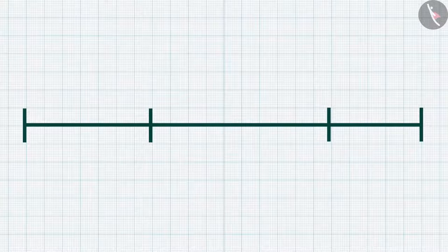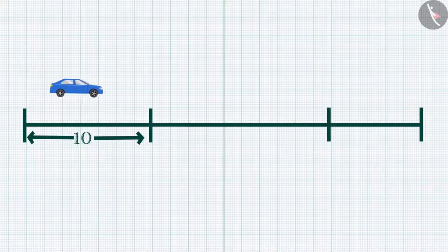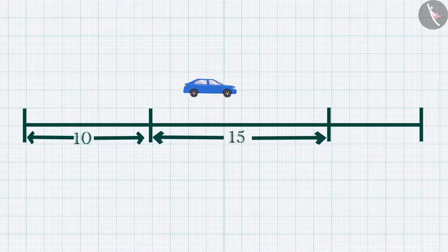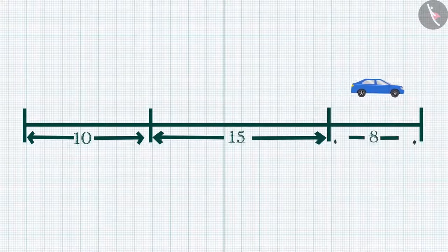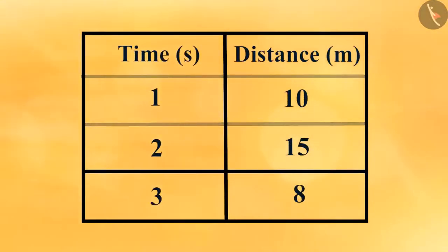For example, a blue car covers 10 meters in the first second, 15 meters in the next second, and 8 meters in the third second. For equal time intervals, the distance covered is not the same, so this type of motion is non-uniform motion.